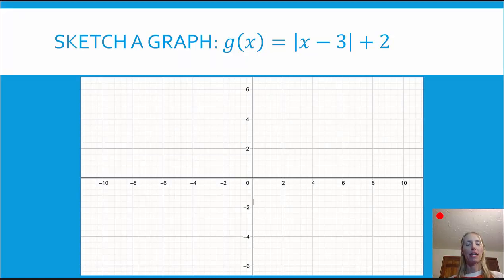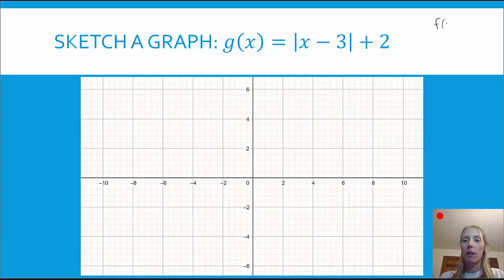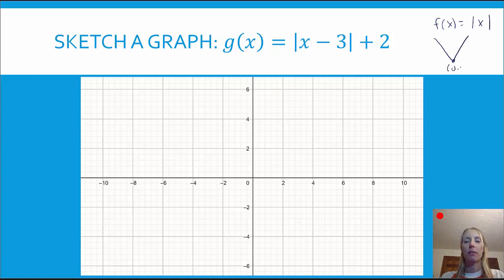Our first example: sketch a graph of g(x) equals the absolute value of x minus 3, plus 2. First let's identify the parent function — that would be f(x) equals the absolute value of x. That graph looks like a V pointed up, and it has key points such as the vertex at (0, 0), and also points (1, 1), (-1, 1), (2, 2), and (-2, 2).